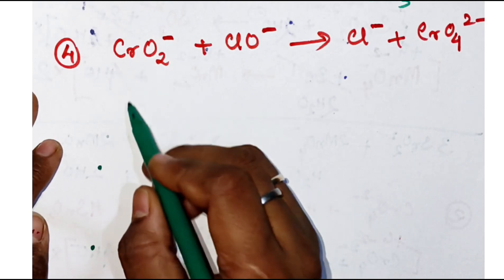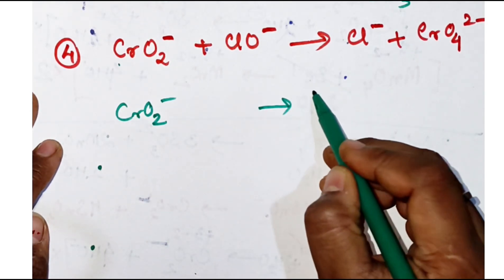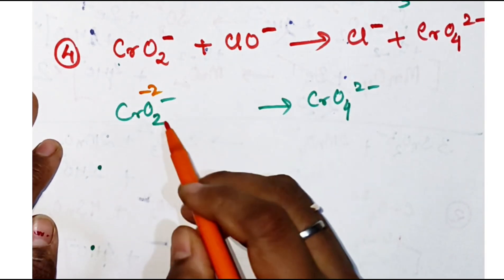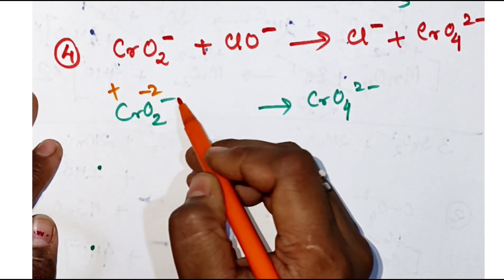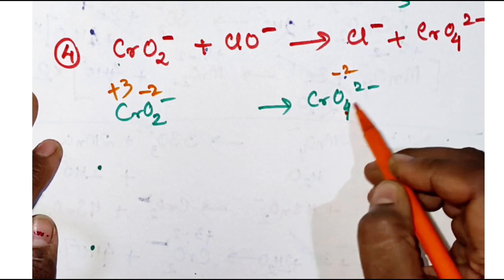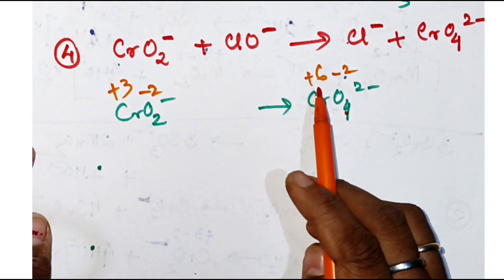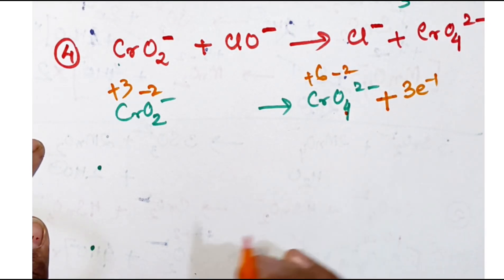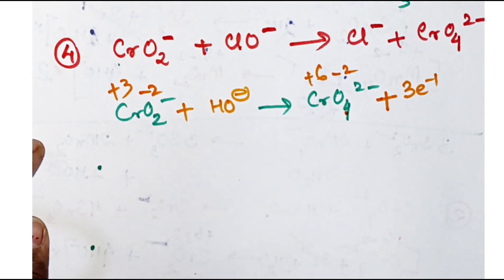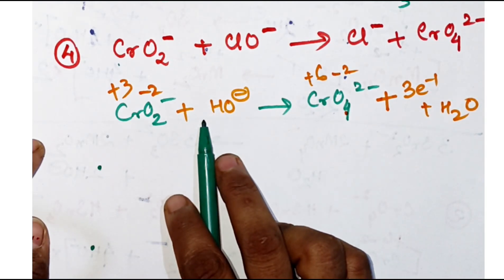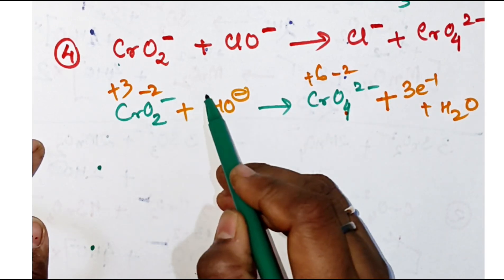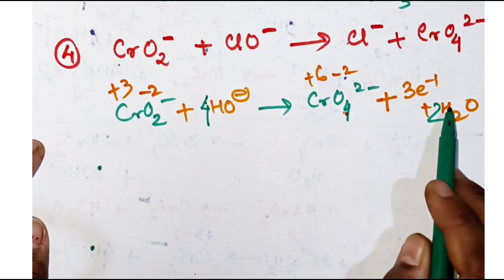The last equation: CrO₂⁻ forming CrO₄²⁻. Oxidation number of chromium in CrO₂⁻: two twos are four minus one gives plus three. In CrO₄²⁻: two fours are eight minus two gives plus six. From plus three to plus six, it has lost three electrons. Oxygen is less on the left side, so we add hydroxyl ions there. Adding four OH⁻ and two H₂O gives six oxygen on both sides — balanced.